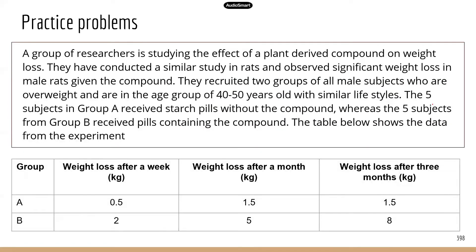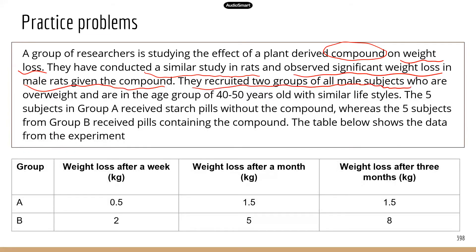Here's a practice problem. A group of researchers is studying the effect of a plant-derived compound and whether it has any relationship to weight loss. They conducted a similar study before in rats and observed significant weight loss in male rats that ingested the compound. Now in a second study, they recruited two groups of male, overweight human subjects aged 40 to 50 with similar lifestyles. Five subjects in group A received starch pills without the compound, and five subjects in group B received pills containing the compound.